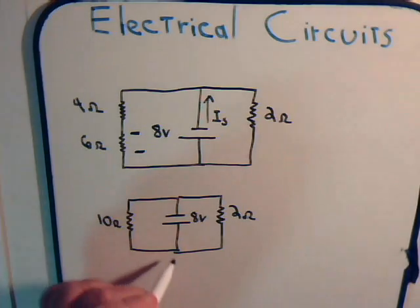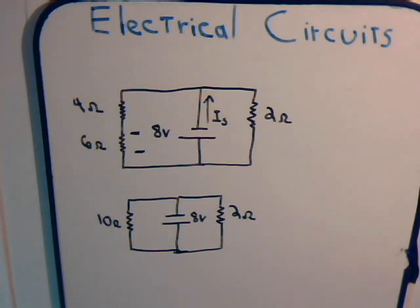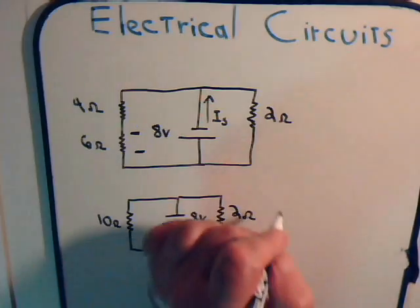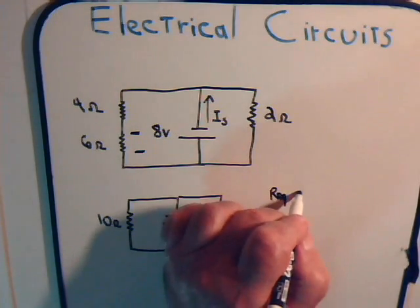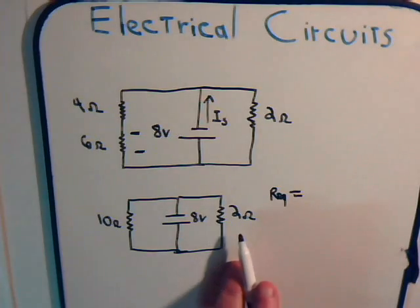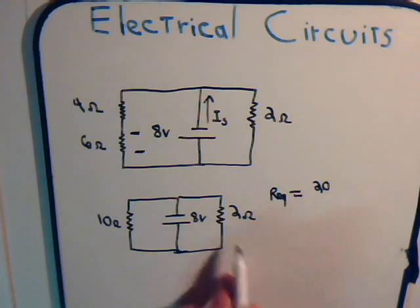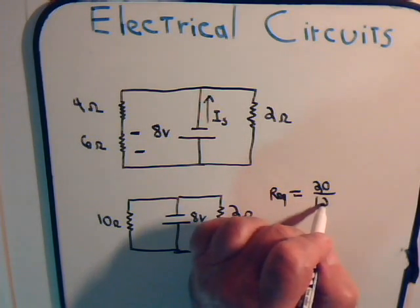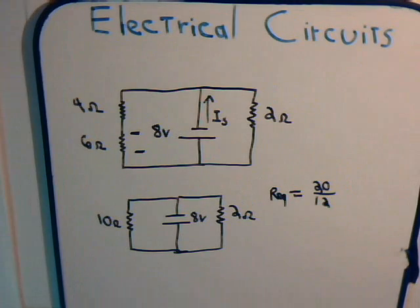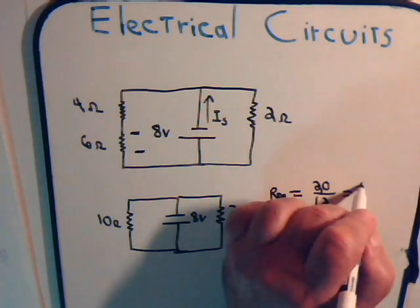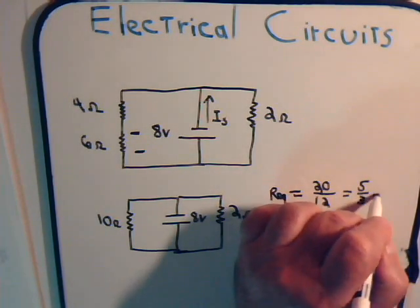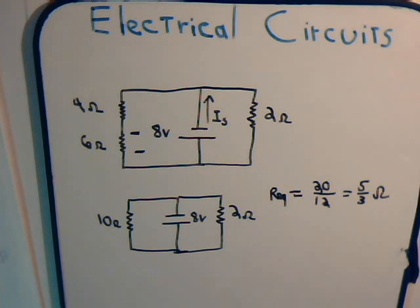So, here's a simple task to find the equivalent resistance of these two parallel resistors. And again, it's their product. It's 10 times 2, it's 20, divided by the sum, which is 12. So the equivalent resistance is 20 over 12 ohms of that circuit, or 5 over 3 ohms, 1 and 2 thirds ohms equivalent resistance.